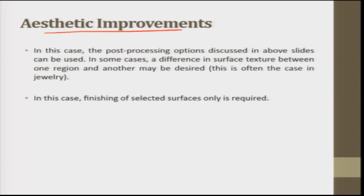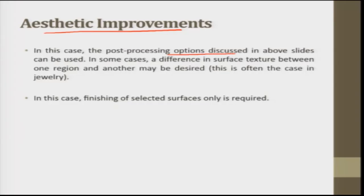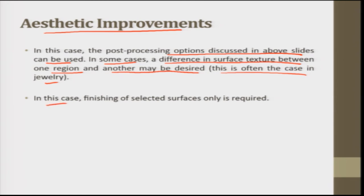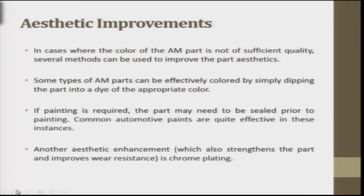Next is aesthetic improvements. Many additive manufacturing parts are manufactured for showroom display or marketing, so aesthetic improvements are very important. Highly aesthetic and appealing products can be developed using the post-processing options discussed. In some cases, a difference in surface structure between one region and another may be desired — often in the case of jewellery. The aesthetic improvement is often solely related to surface finish, so finishing selected surfaces only may be required.